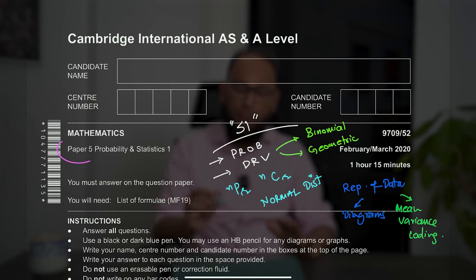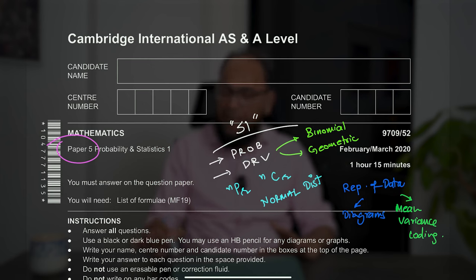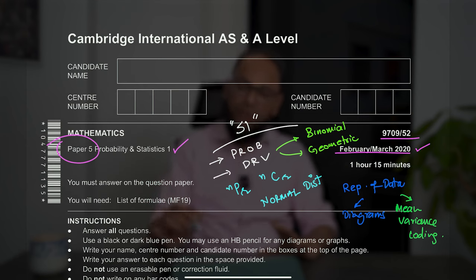S1 is typically the first optional component done at AS level, though some students take it alongside P3. The S1 paper is Paper 5 — before 2020 it was Paper 6. Looking at the February/March 2020 paper: there is one variant in March, three variants in May/June, and three variants in November, giving seven papers in total per year.